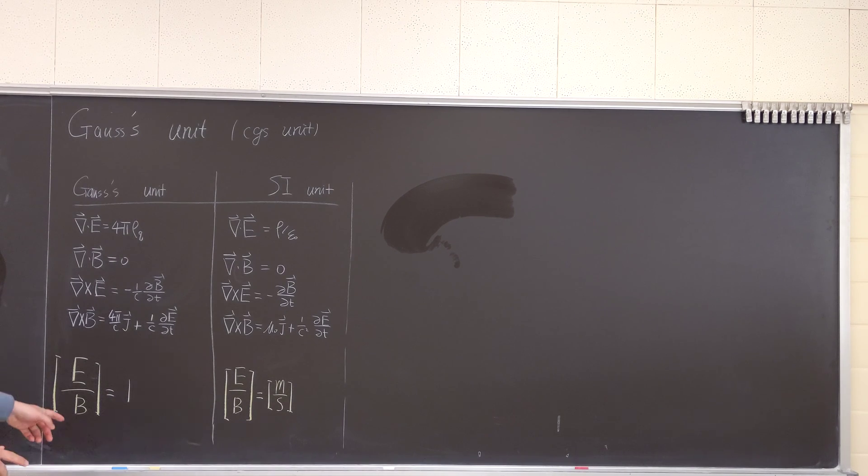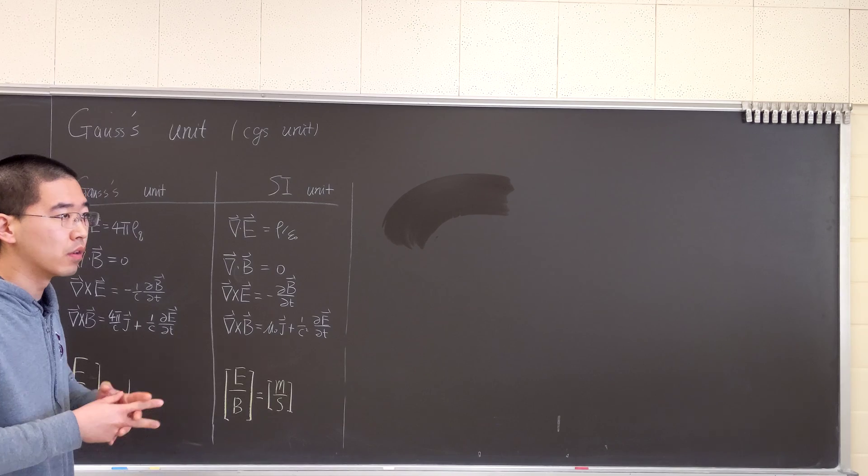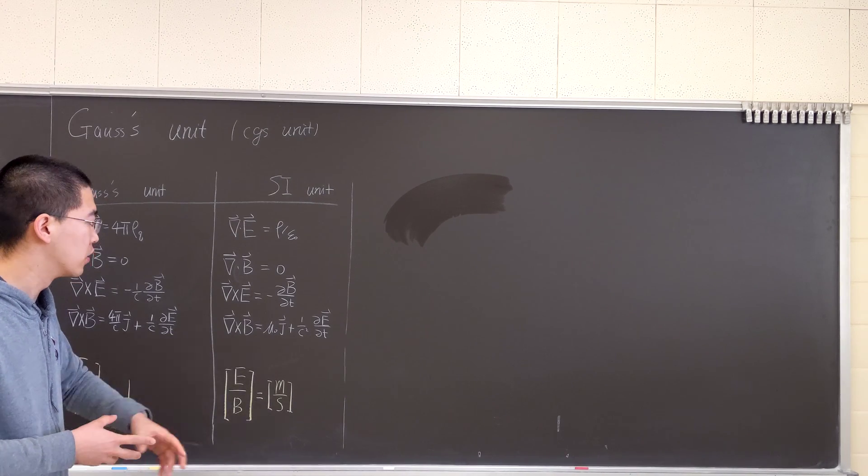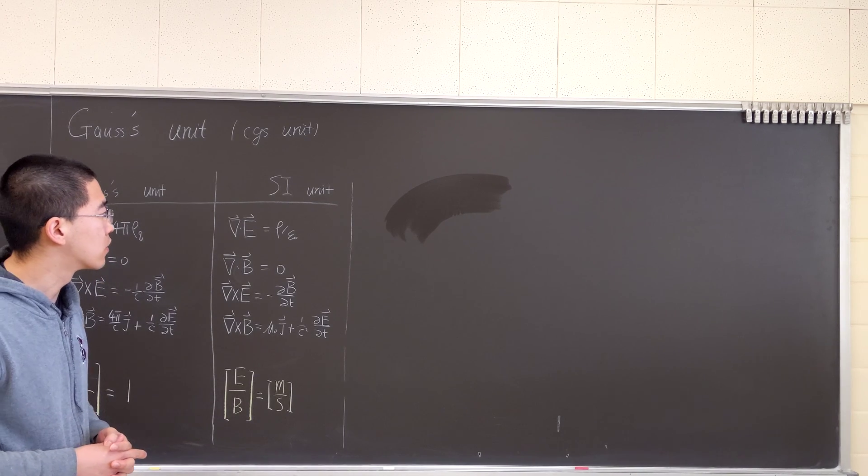we have E over B of unity. On the other hand, the SI unit will give us an E over B of a unit of velocity, or M over S, distance over time.